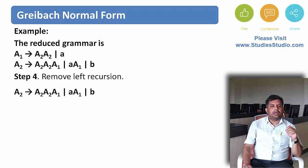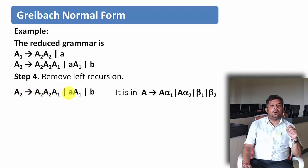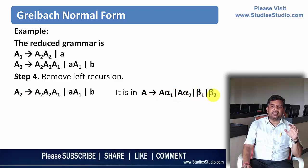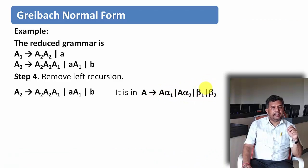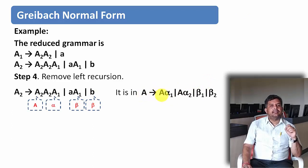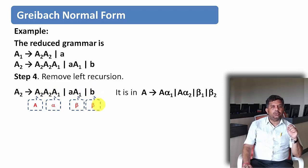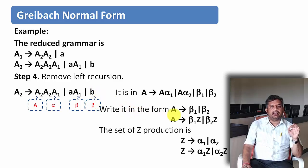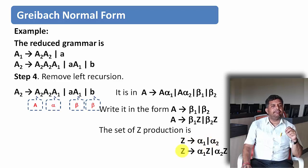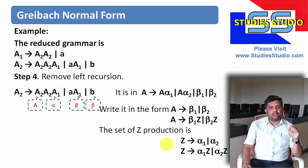Let us learn how to remove left recursion. If a production is in the form A derives A·alpha1 | A·alpha2 | beta1 | beta2 (with any number of alphas and betas), we rewrite it as: A derives beta1 | beta2, A derives beta1·Z | beta2·Z, and for the new variable Z: Z derives alpha1 | alpha2, and Z derives alpha1·Z | alpha2·Z. We apply this pattern to remove the left recursion.